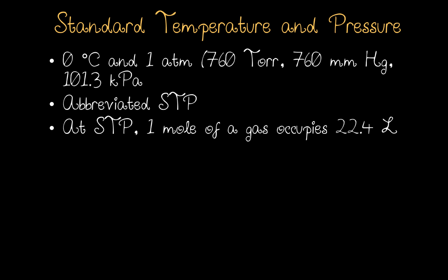At STP, 1 mole of a gas occupies 22.4 liters. But what does 1 mole mean? 1 mole is defined as 6.02 × 10²³ particles — that's referred to as Avogadro's number. Whether atoms, ions, molecules, or whatever, 1 mole is 6.02 × 10²³ particles, which is also referred to as Avogadro's number.